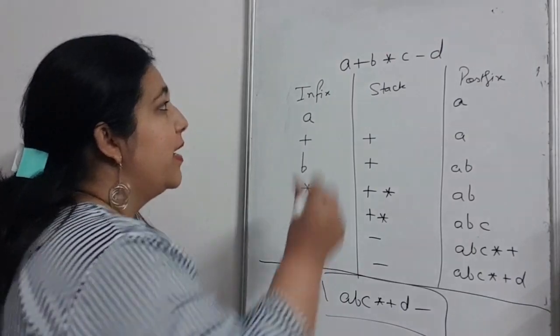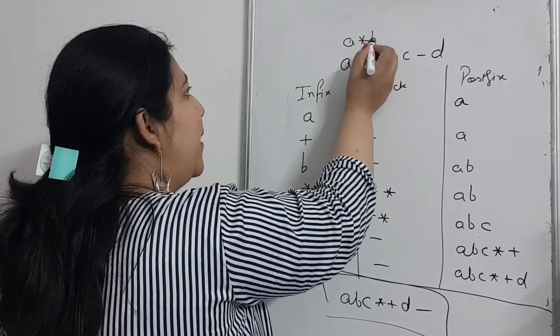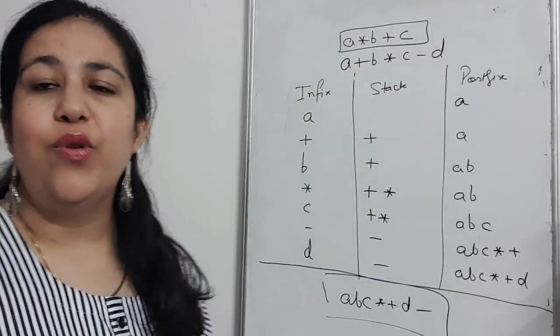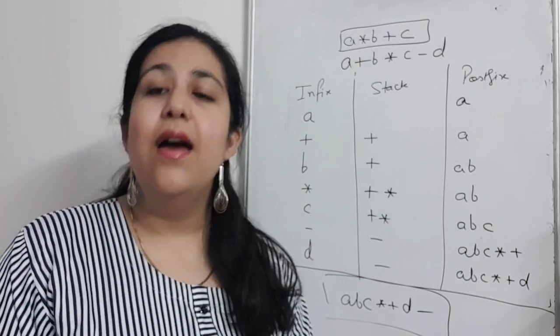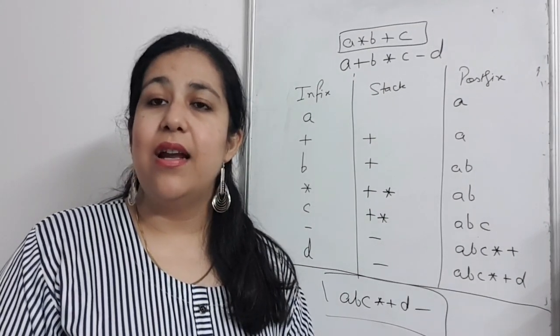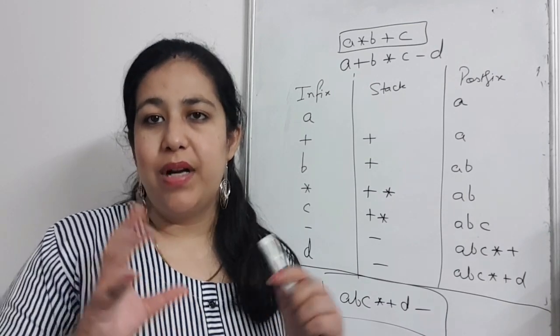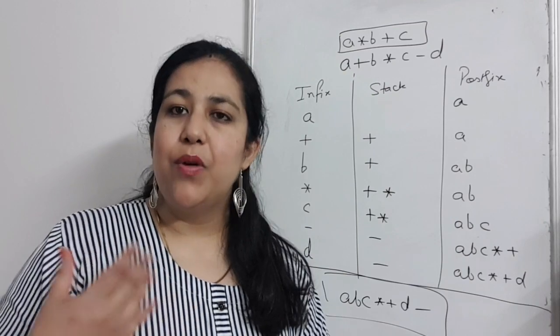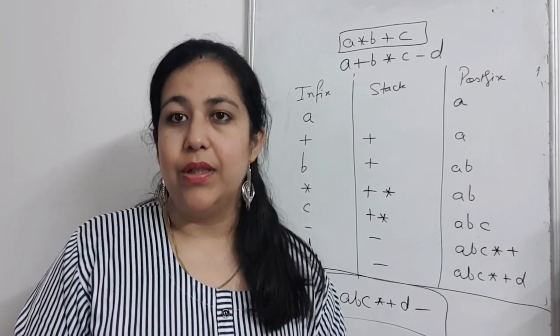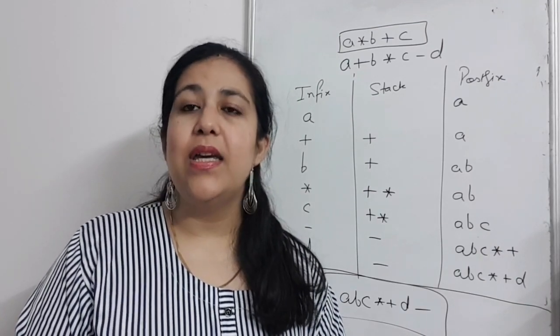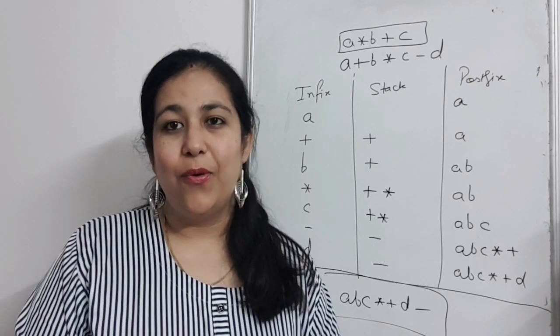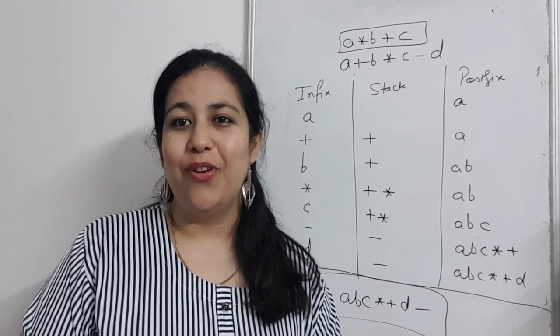Now you try yourself. You change this, let it be A multiplied by B plus C. After 2-3 examples, we will introduce that if we have parentheses in the expression, how do we convert it? I hope you are clear on how to do this conversion. If yes, do click the like button, share the video and don't forget to subscribe the channel. That's it for this one. By the time I upload more, keep watching, keep learning. Thank you.